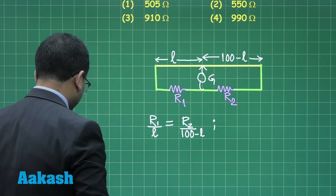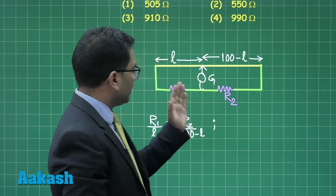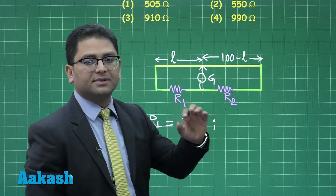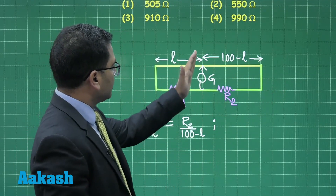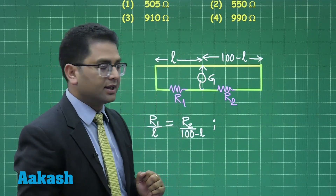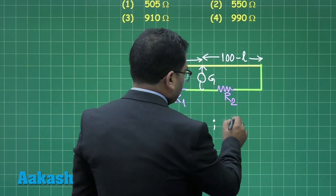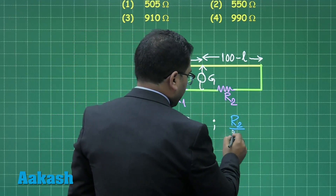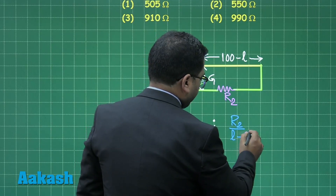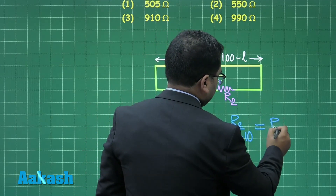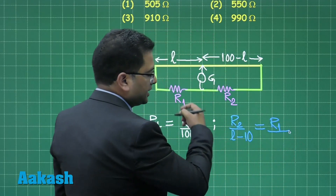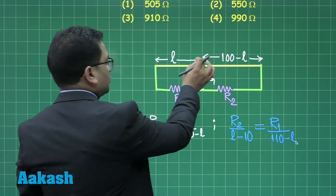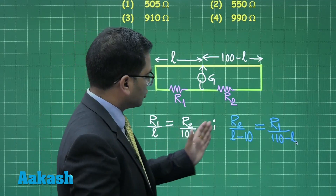On interchanging, R1 is replaced by R2 and R2 by R1. The balance length shifts left by 10 centimeters. So the new equation is: R2 divided by (l minus 10) equals R1 divided by (110 minus l), since 10 is subtracted on one side and added on the other.